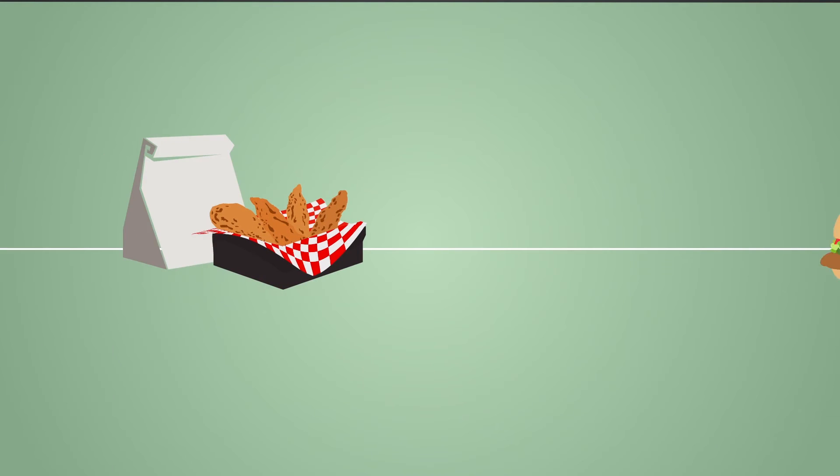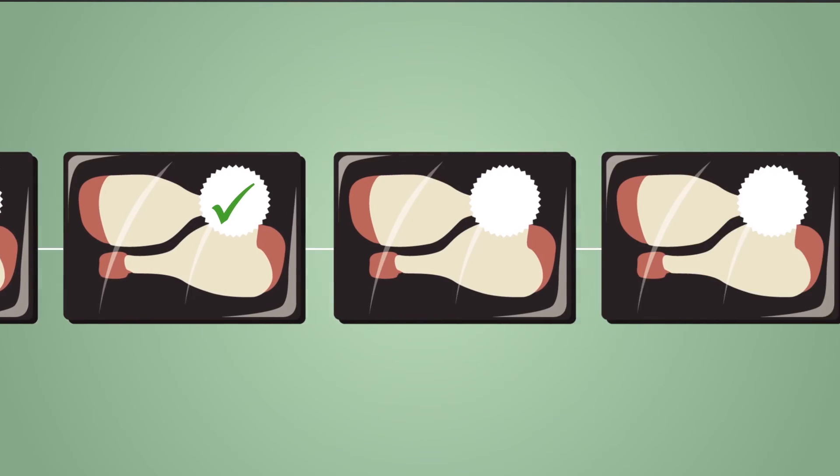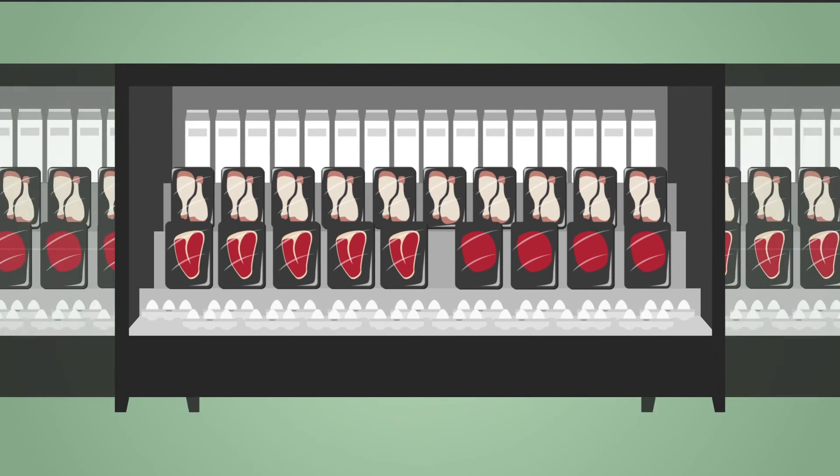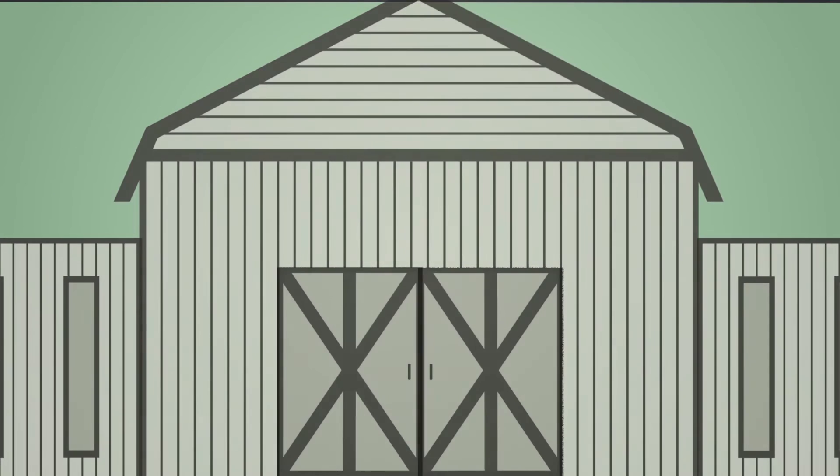Restaurants like Chick-fil-A and McDonald's take the lead with plans to remove antibiotics from their chicken supply. Tyson, the U.S.'s biggest chicken processor, plans to eliminate all human antibiotics. And Walmart, the world's largest retailer, asks its suppliers to limit use of antibiotics to treating sick animals, and never to use them to promote growth.